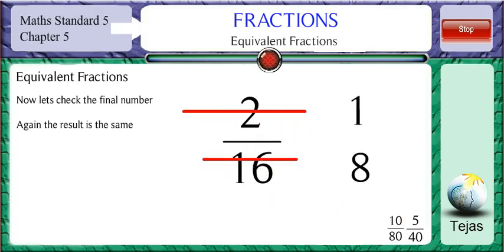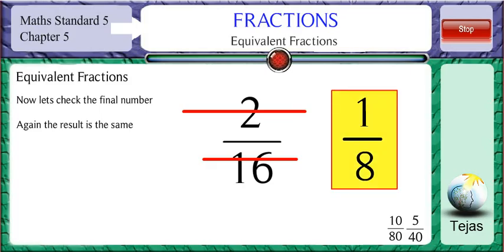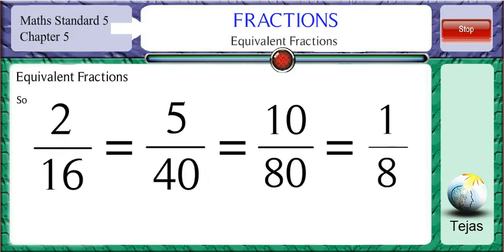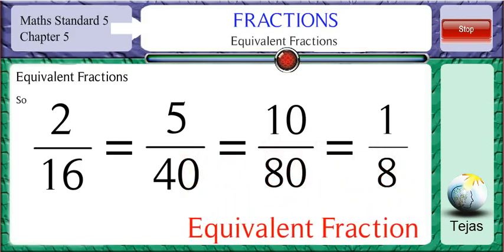So in each of these scenarios, we see that on simplification, the value is 1 by 8. These fractions 10 by 80, 5 by 40, and 2 by 16 are called equivalent fractions. So the fractions which on simplification give the same value are called equivalent fractions.